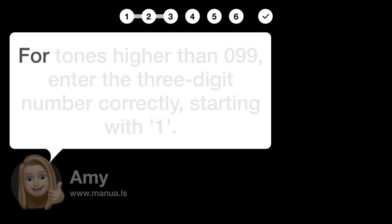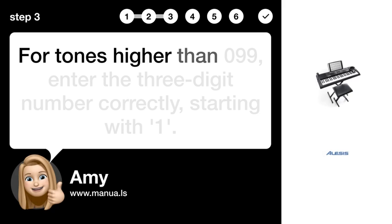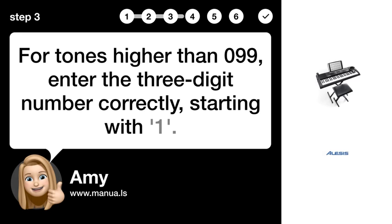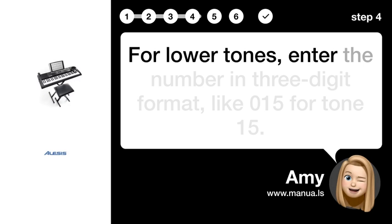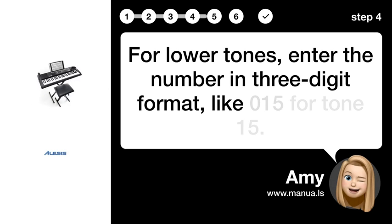Step 3: Enter high tones. For tones higher than 99, enter the three-digit number correctly, starting with 1. Step 4: Enter low tones. For lower tones, enter the number in three-digit format, like 015 for tone 15.